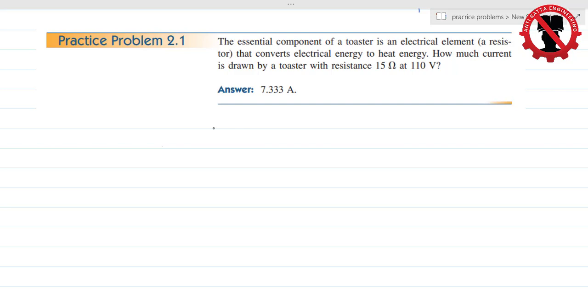This is related to Ohm's law. We have 15 ohm resistance, so R is equal to 15 ohm, and 110 volts, so we have voltage equal to 110 volt. What we are required to find is the current, so I is needed.